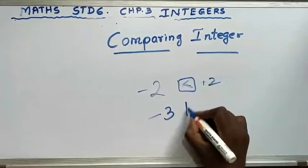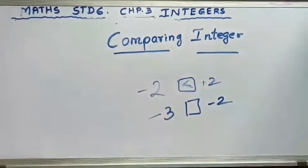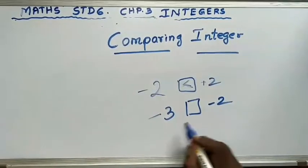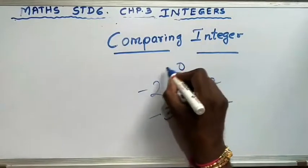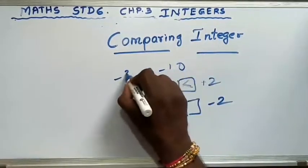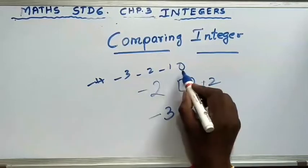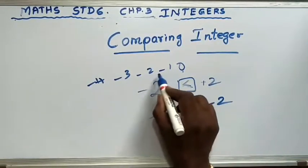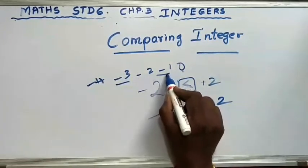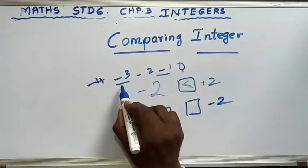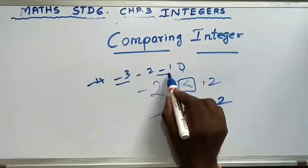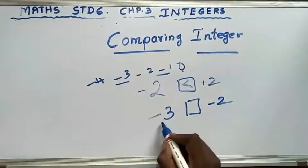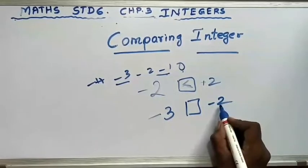Minus 3 and minus 2 — which is greater? Minus 2 is greater. Because on the number line: 0, minus 1, minus 2, minus 3. So 0 is biggest. As you go left it becomes smaller. So minus 1 is bigger than minus 2, and minus 2 is bigger than minus 3. So minus 2 is greater than minus 3.